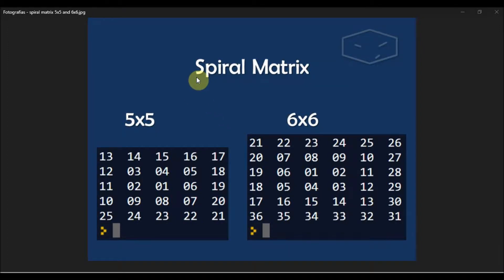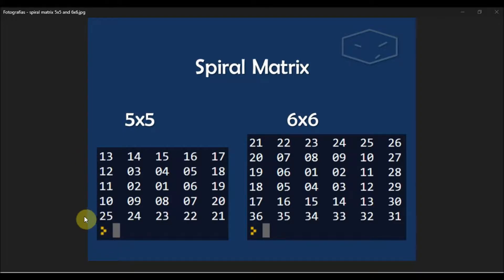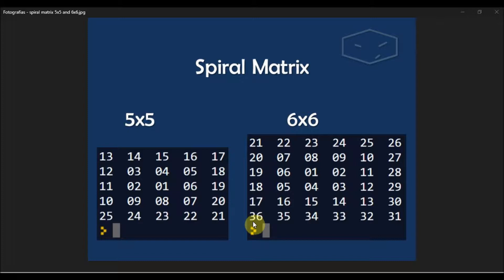Hello guys. In this video I will do something different. Someone asked me to do a 5x5 and 6x6 spiral matrix, but instead of starting at the top left it will start from the bottom left, and instead of increasing the number it will decrease the number. So in this case we'll go from 25, 24, 23 and so on till number one, and for 6x6 it's 36, 35, 34 and so on.